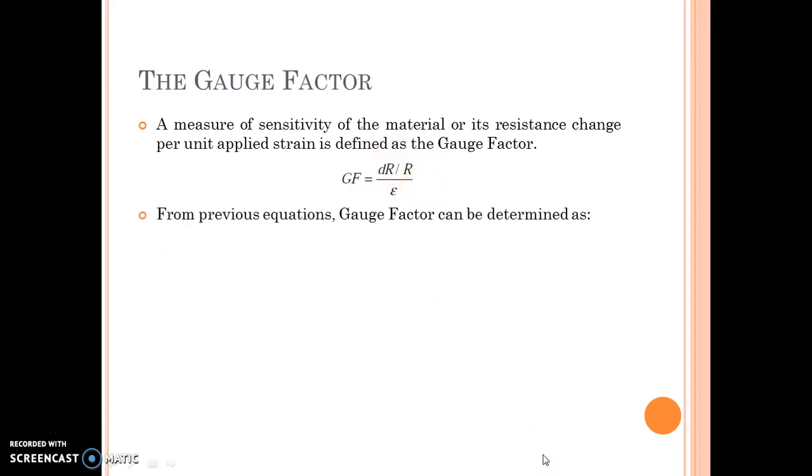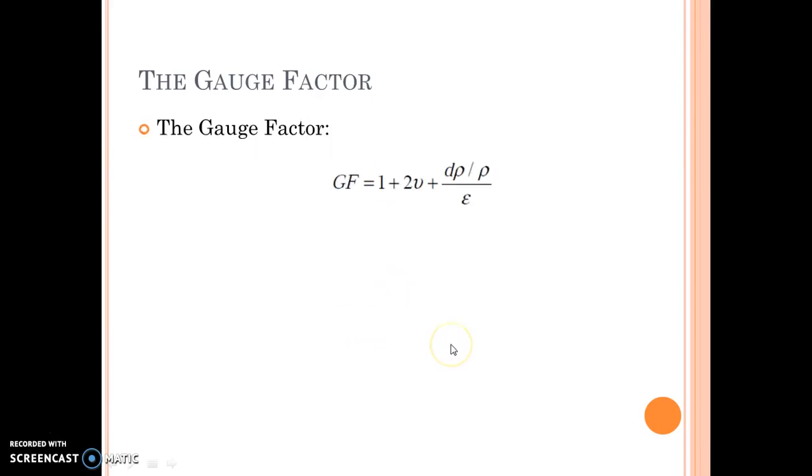From previous equations, gauge factor can also be determined by this. The gauge factor gives the sensitivity of strain gauge. What is sensitivity? It is output divided by input. Output is change in resistance per original resistance, whereas input is the applied strain. So by gauge factor, we mean sensitivity of strain gauge.